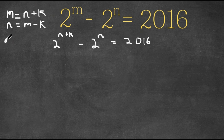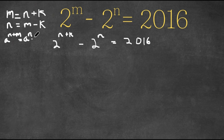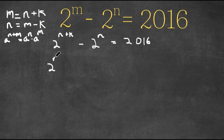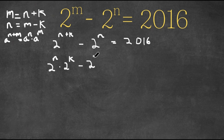Now, if we have something in the form a to the power of n plus m, this can also be written as a to the power of n times a to the power of m. So 2 to the power of n plus k can be written as 2 to the power of n times 2 to the power of k. And we are still subtracting 2 to the power of n, and this is equal to 2016.